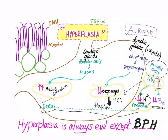Also, as a note: TGF-alpha — transforming growth factor alpha — is responsible for Ménétrier's disease.